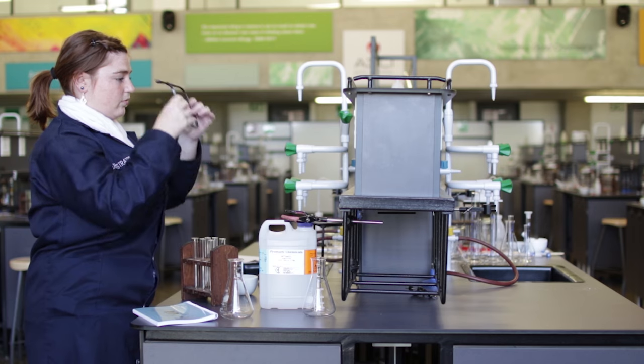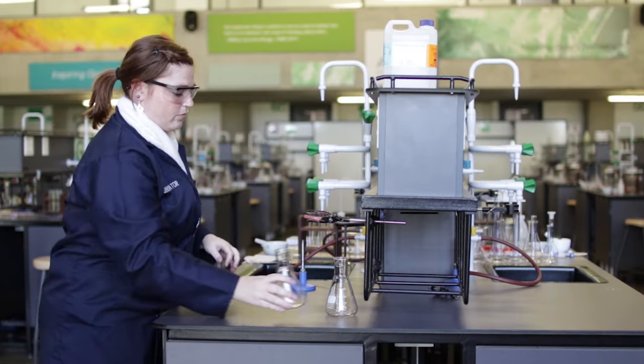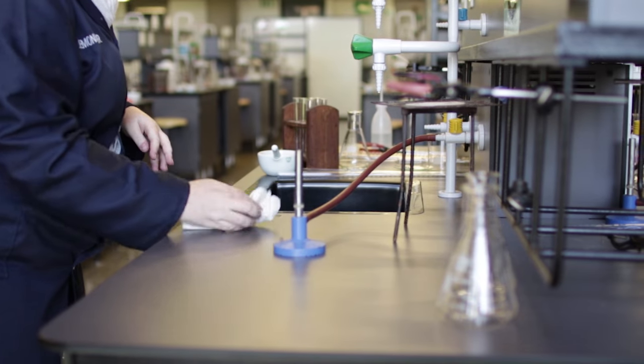Check that the area around your Bunsen burner on your bench is clear and that there are no flammable substances such as alcohols anywhere near your bench.